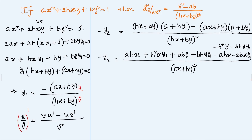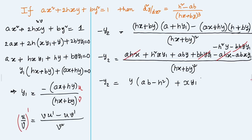Now let's cancel terms. The ahx terms cancel and the bhy·y₁ terms cancel. What is left out: we have aby - h²y, which we can factor as y(ab - h²), and the remaining x·y₁ terms factor as x·y₁(h² - ab), all over (hx + by)².